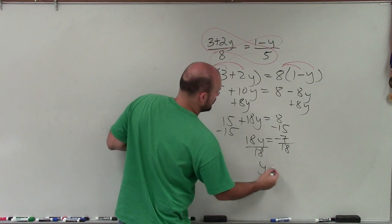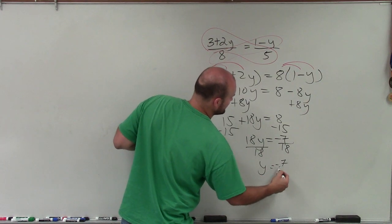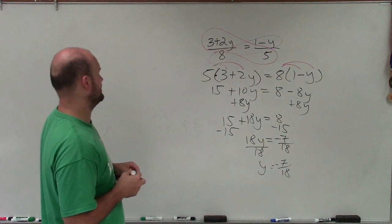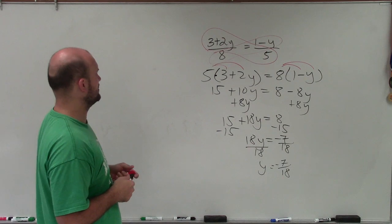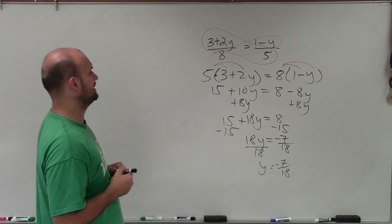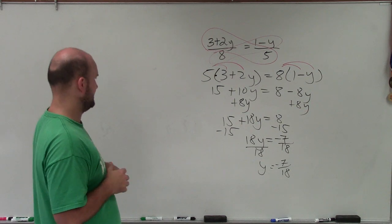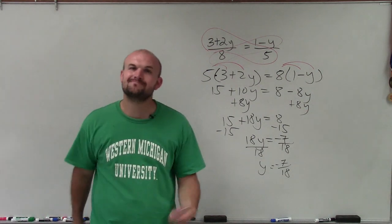Y equals negative 7 eighteenths, which cannot be simplified. I just want to make sure I did all my work correctly. Yep. Minus 8y, add 8y, 18. Subtract 15, negative 7. Very good. So there's your solution. Thanks.